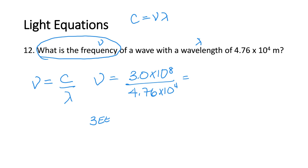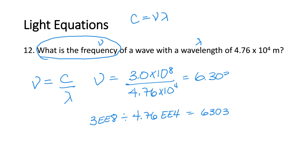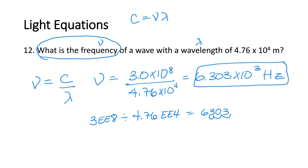In the calculator I enter 3 EE 8 divided by 4.76 EE 4. When I do that I get 6,302-point-something. The answer shouldn't be like that — we need to put it in scientific notation. So the answer is 6.30 × 10³ Hertz. Remember, frequency is in Hertz.